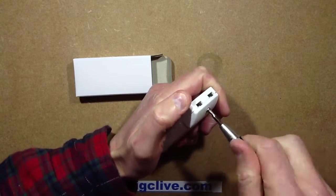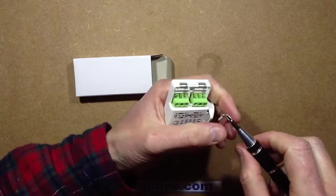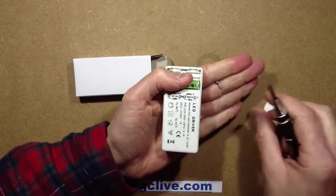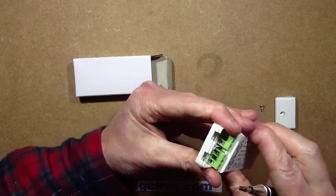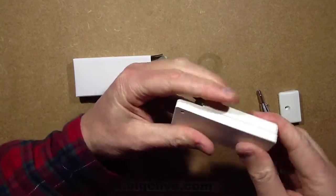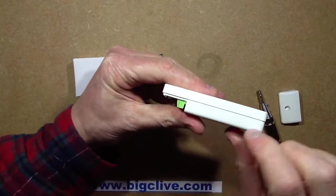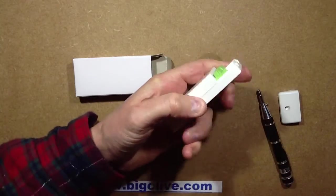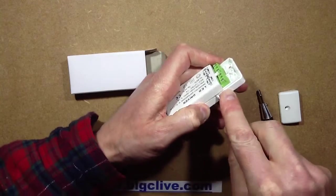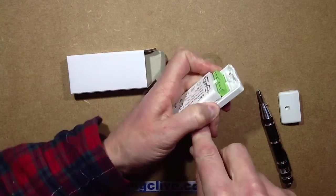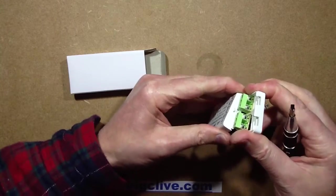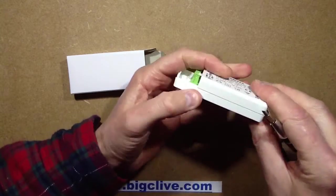So I'm guessing this one comes to bits in the same way. Maybe not. I can see there are clips under the casing, so I shall just pry with force. Still doesn't want to come to bits.